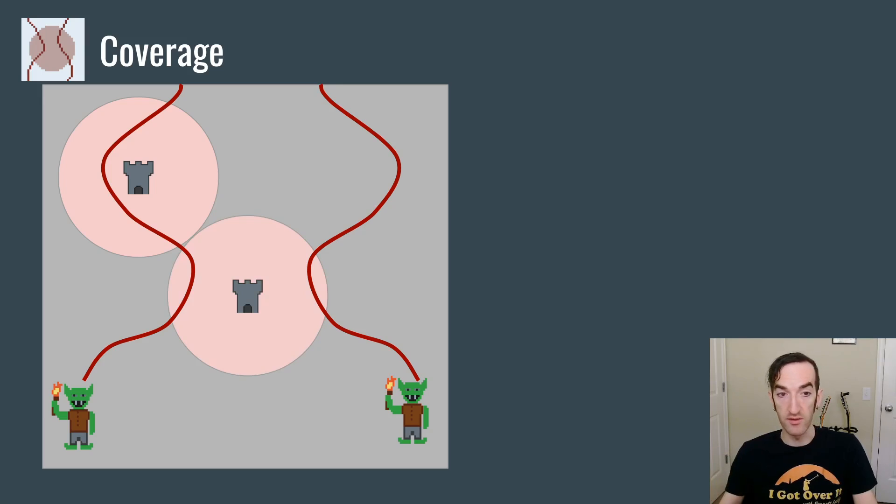Whereas this tower here in the center, let's say it is infinitely powerful and attacks very quickly, then it's going to be able to kill absolutely every monster that comes through. So I would define coverage as the percent of all monsters that can be attacked by a tower at a given placement.